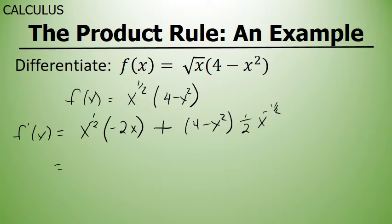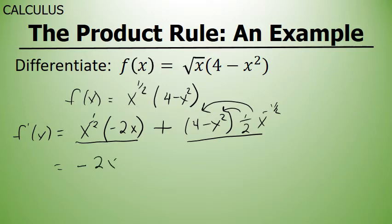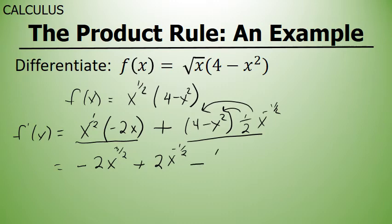Simplifying this derivative involves multiplying x to the 1 half times negative 2x, and distributing 1 half x to the negative 1 half power times the quantity of 4 minus x squared. In both instances, I'm going to use the law of exponents that states when multiplying the same base, the exponents are added. So x to the 1 half times negative 2x is negative 2x to the 3 halves. Distributing 1 half x to the negative 1 half yields 2x to the negative 1 half power, minus 1 half x to the 3 halves power.